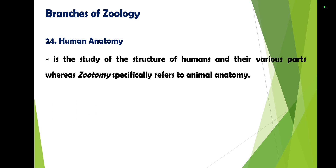Human anatomy is the study of the structure of humans and their various parts, whereas zootomy specifically refers to animal anatomy. Always remember the difference: human anatomy pertains to parts of the human body, while zootomy refers to animal anatomy.